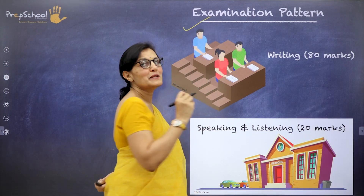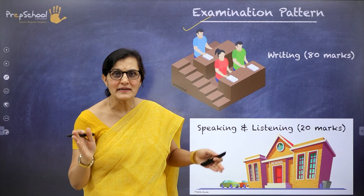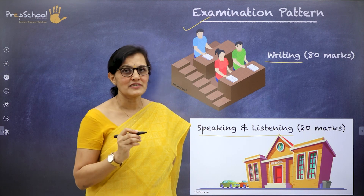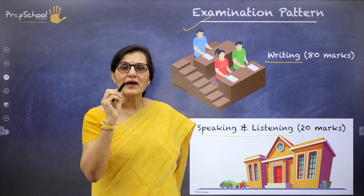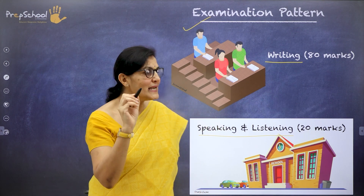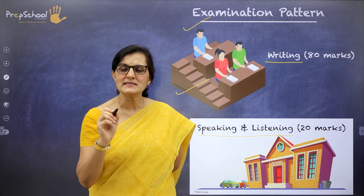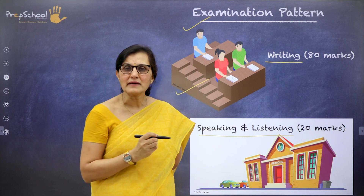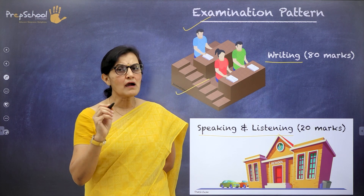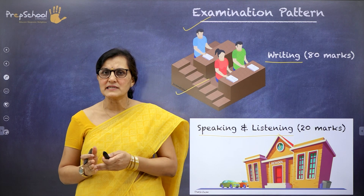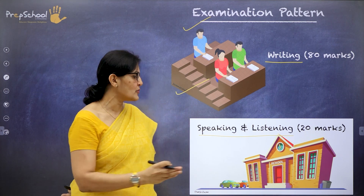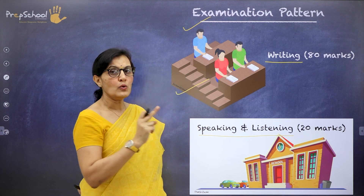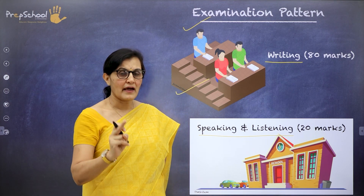Here is something most important — your examination pattern. I have separated them into writing and your assessment of speaking and listening. When I say writing, it is your annual examination wherein you will write, sitting in an examination hall, a CBSE set question paper for 80 marks. When I say assessment of speaking and listening, it is a school-based assessment — just like practicals in biology, physics, and chemistry — your school teacher will assess you for 20 marks.